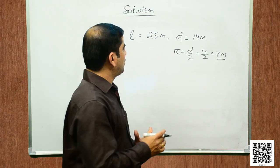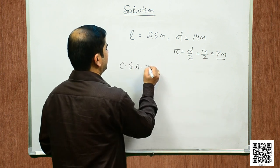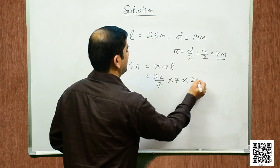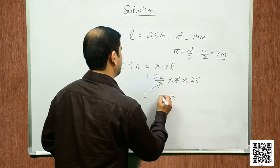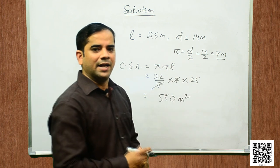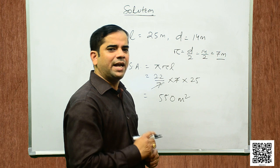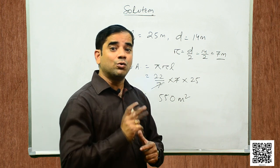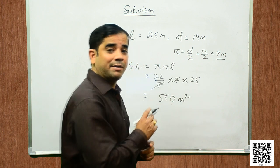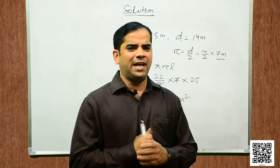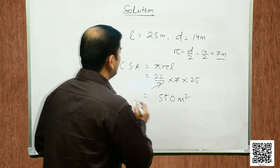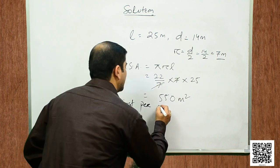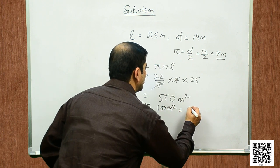Let us now find the curved surface area. Curved surface area = π r l = 22/7 × 7 × 25 = 550 square meters. The curved surface area is 550 square meters. Now, find the cost of whitewashing its curved surface at the rate of rupees 210 per 100 square meters. So, cost per 100 square meters is rupees 210.